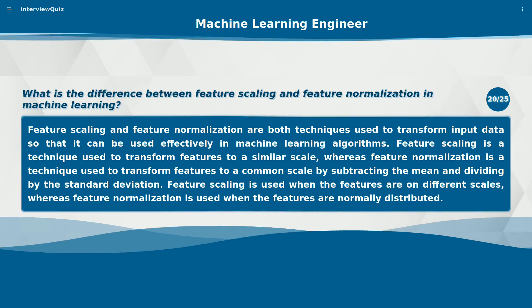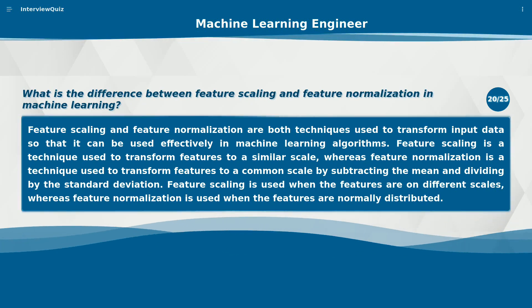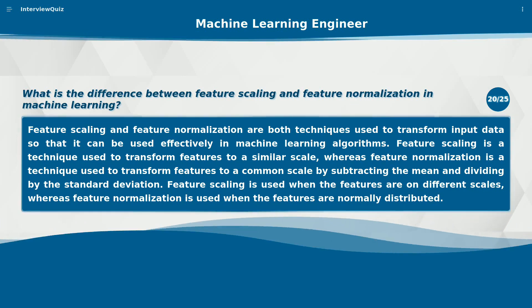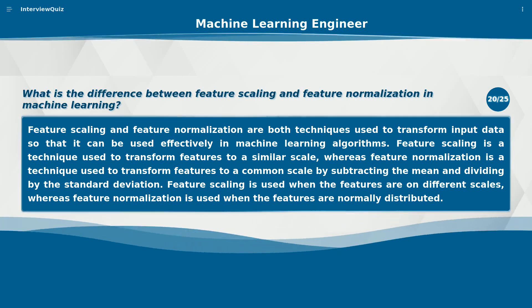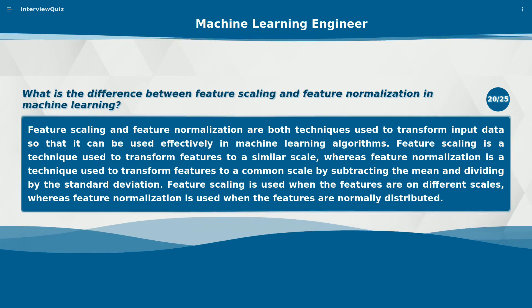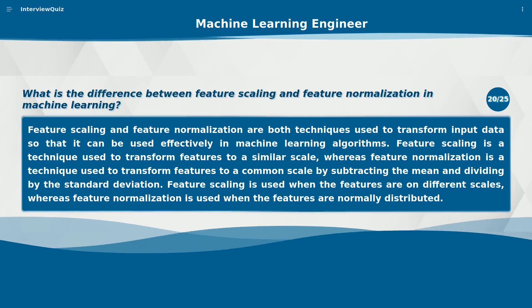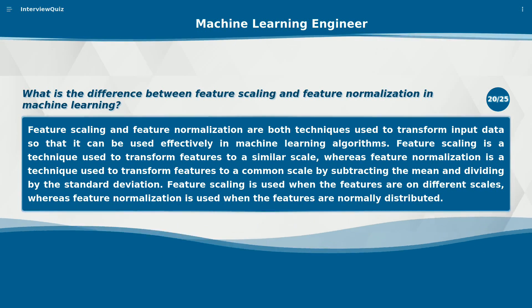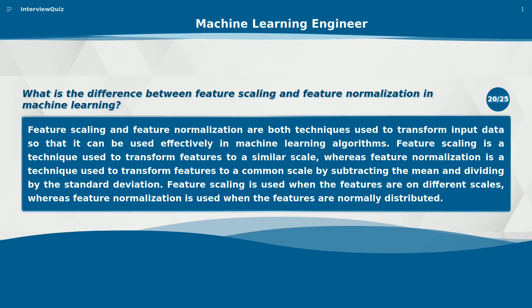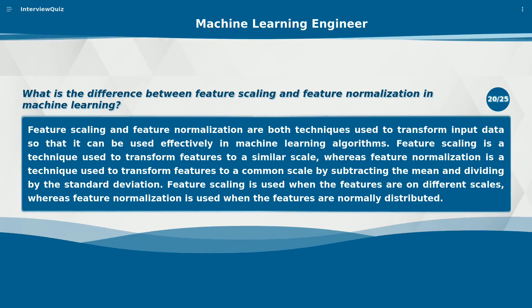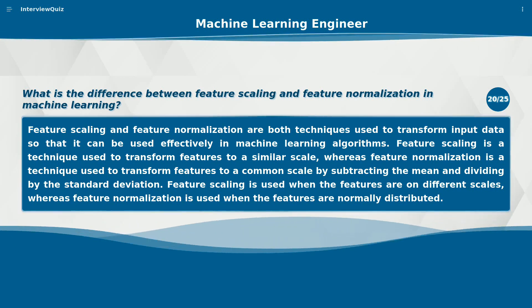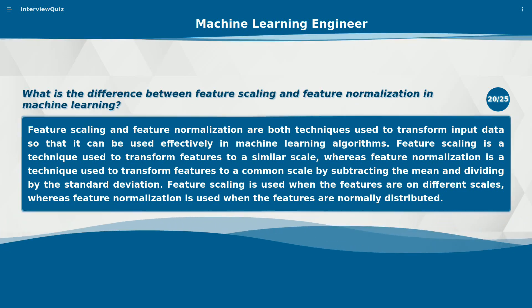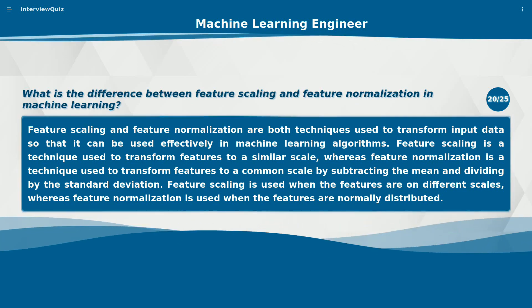What is the difference between feature scaling and feature normalization in machine learning? Feature scaling and feature normalization are both techniques used to transform input data so that it can be used effectively in machine learning algorithms. Feature scaling transforms features to a similar scale, whereas feature normalization transforms features to a common scale by subtracting the mean and dividing by the standard deviation. Feature scaling is used when the features are on different scales, whereas feature normalization is used when the features are normally distributed.